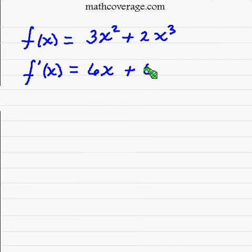So we have 6x + 6x². And then we set this thing equal to zero, because remember the derivative gives you the slope of the tangent line and we're concerned about where the slope of tangent lines are zero. So we set this thing equal to zero.